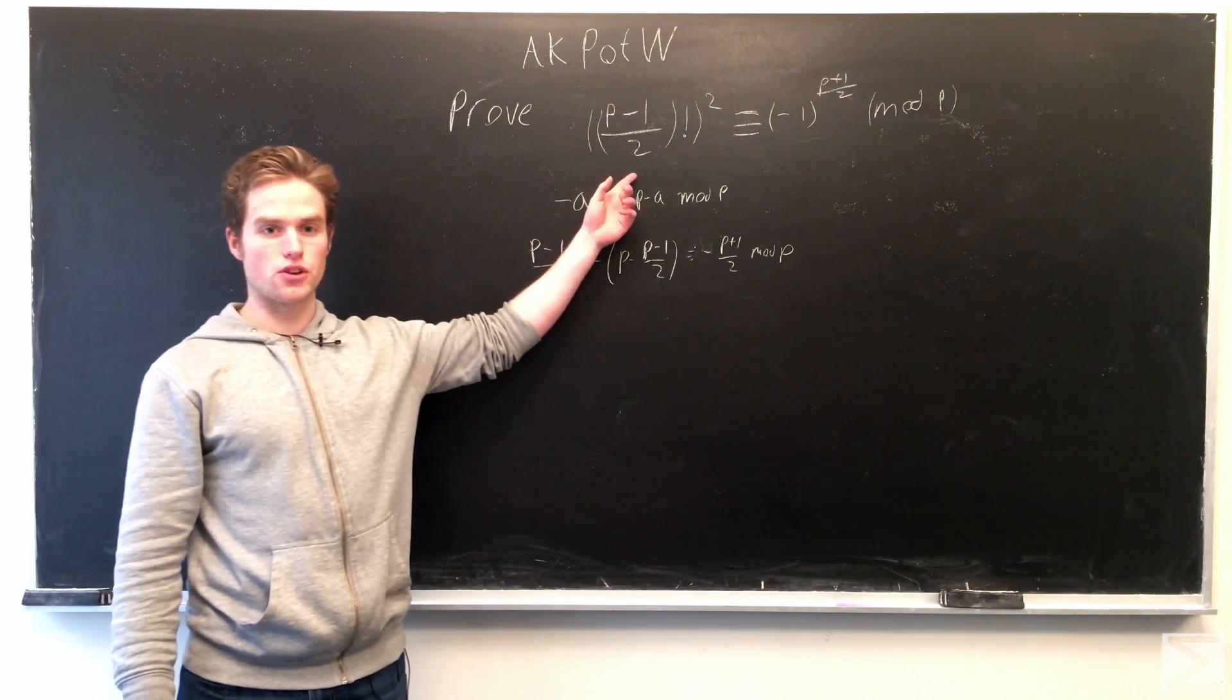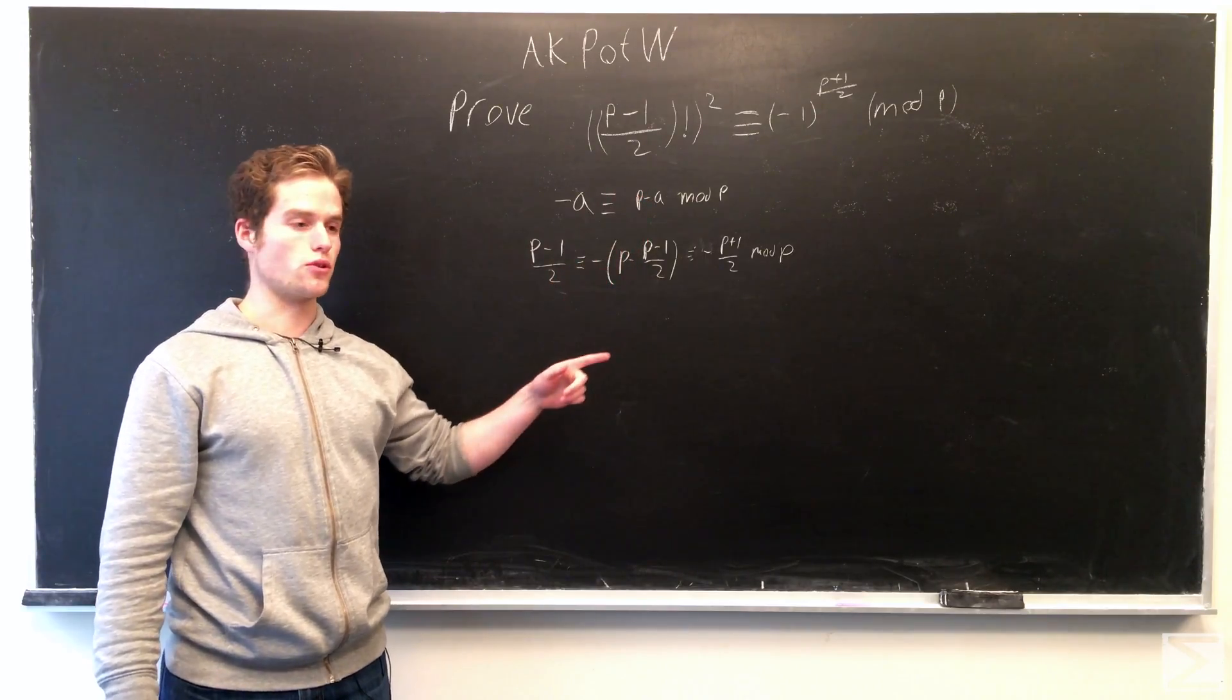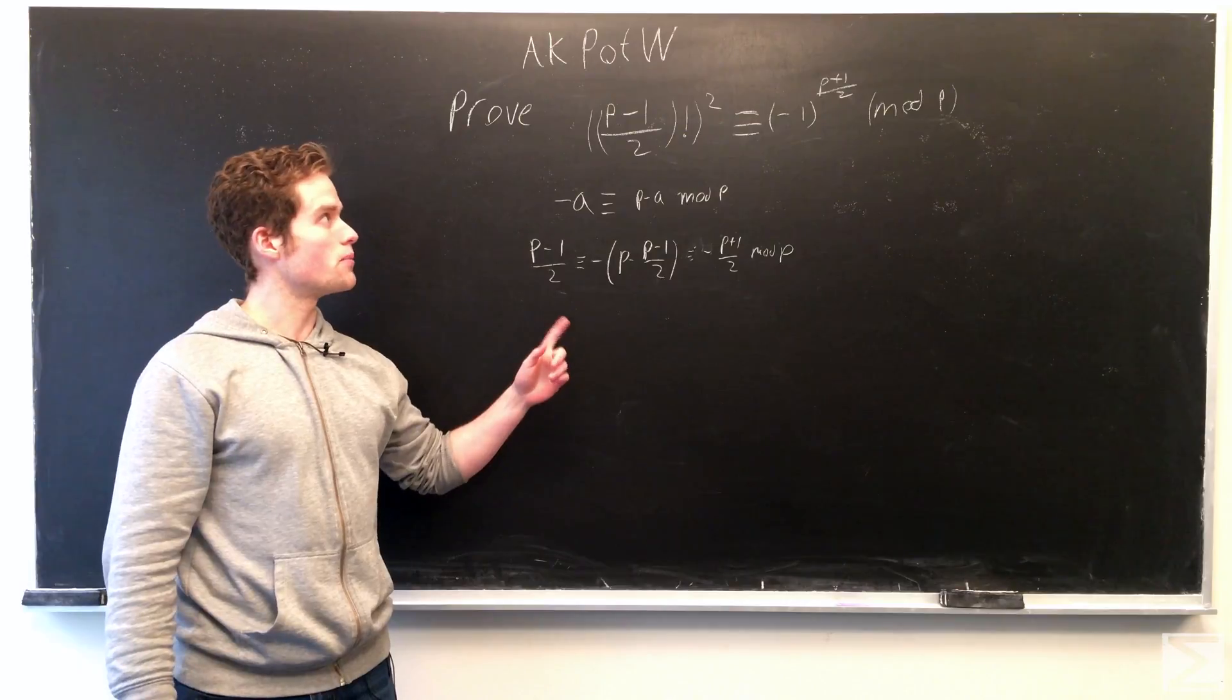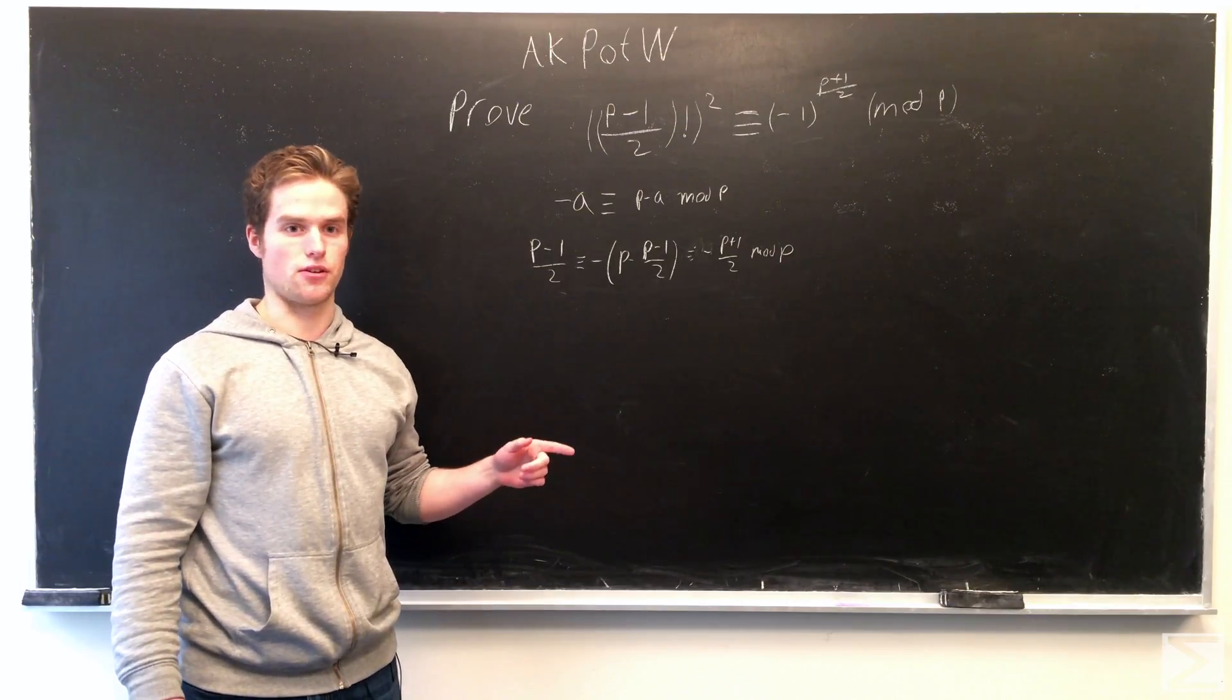So essentially, each term in (p-1)/2 factorial, we can say it's equivalent to the negative of p minus that term.